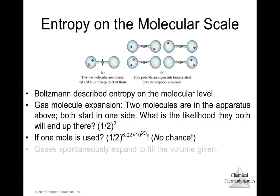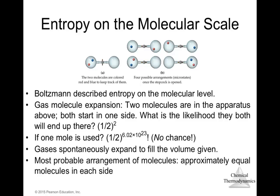The most probable arrangement of molecules will have approximately equal numbers of molecules on each side. So with four molecules total, the most probable state has two on each side rather than all on one side. That most probable arrangement corresponds to the highest entropy state.